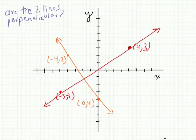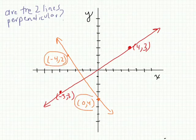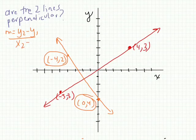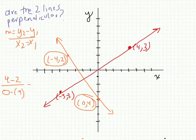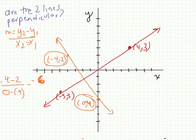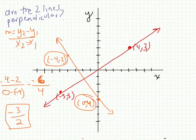Are these lines perpendicular? First, find the slope of each line and then check if their slopes are negative reciprocals. For the orange line — first and second coordinates — slope is y2 minus y1 over x2 minus x1: 4 minus 2 over 0 minus negative 4. Wait — the y values should be negative 4 and negative 2, giving negative 6 over 4, which reduces to negative 3 over 2. That's the slope of the orange line.